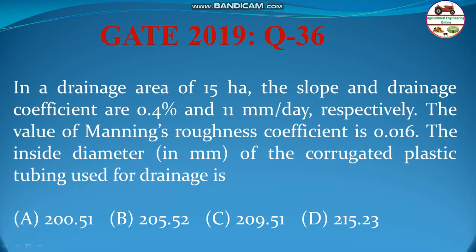Hello students, welcome to my channel. Now, question number 36. In a drainage area of 15 hectare, the slope and drainage coefficient are 0.4 percent and 11 millimeter per day respectively. The value of Manning's roughness coefficient is 0.016, that inside diameter of the corrugated plastic tubing used for drainage is to be found.